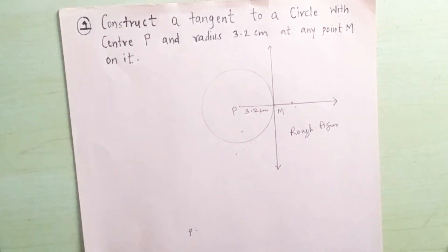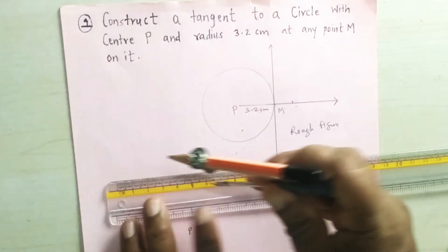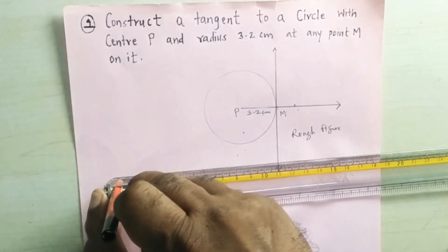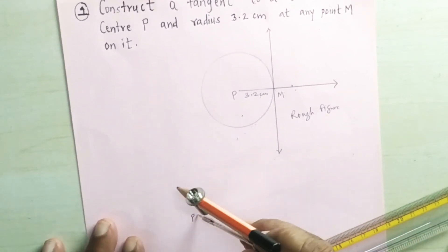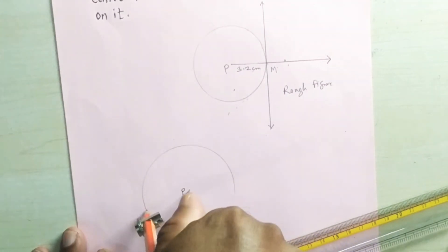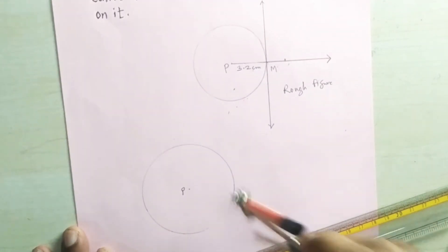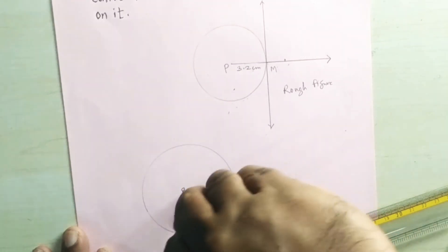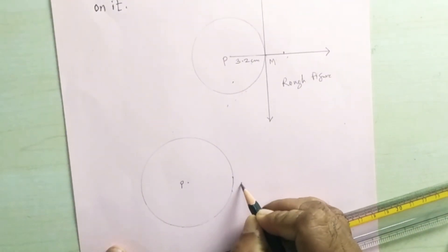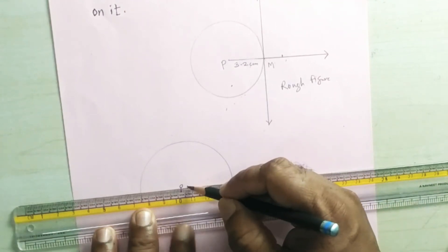To draw: first take center P, then take the compass and set the distance equal to 3.2 centimeters. Place the pointer at P and draw the circle of radius 3.2 centimeters. Now take any point M on the circle and draw a ray passing through point M from the center of the circle.